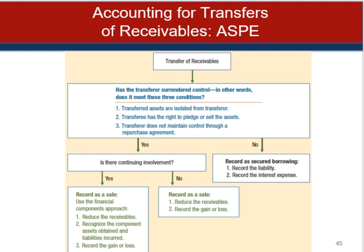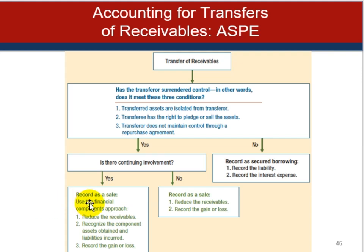This is a quick summary of the treatment under ASPE for transfer of receivables. If the three conditions are met and there is continuing involvement in collections, you record it as a sale using the financial components approach — reduce the receivables, recognize component assets obtained and liabilities incurred, and record a gain or loss. If there is no continuing involvement, record it as a sale by simply reducing the receivables and recording the gain or loss at that time.